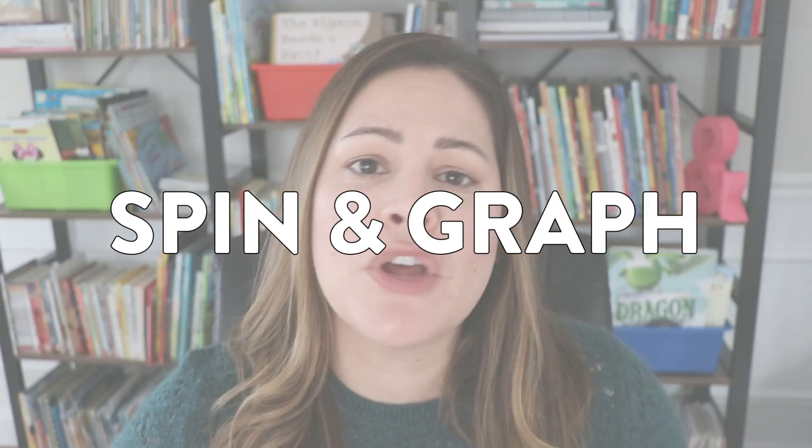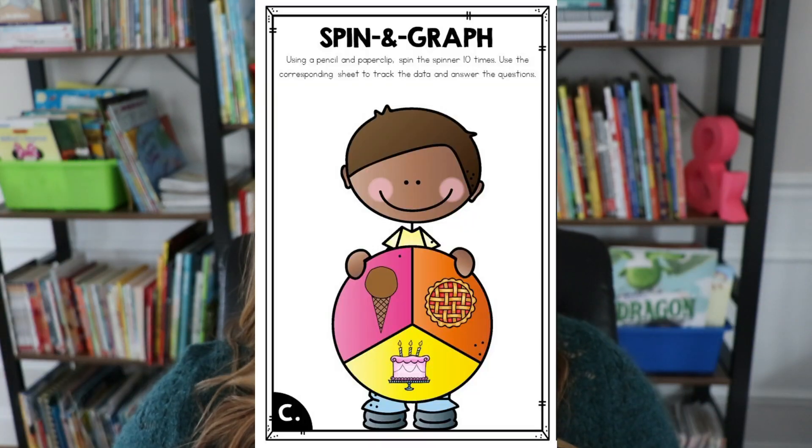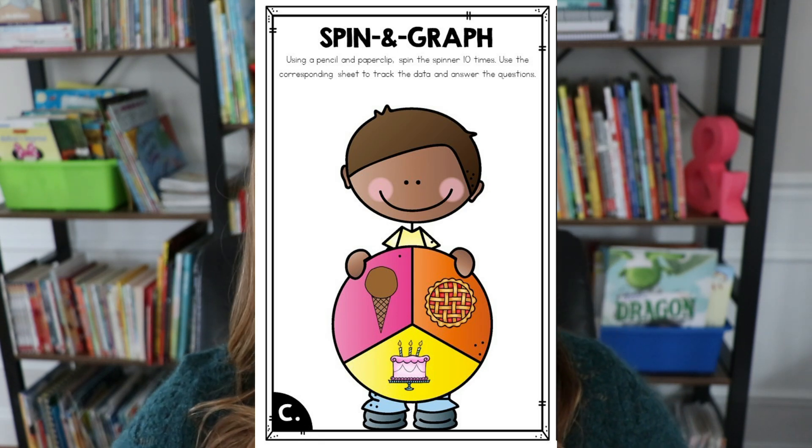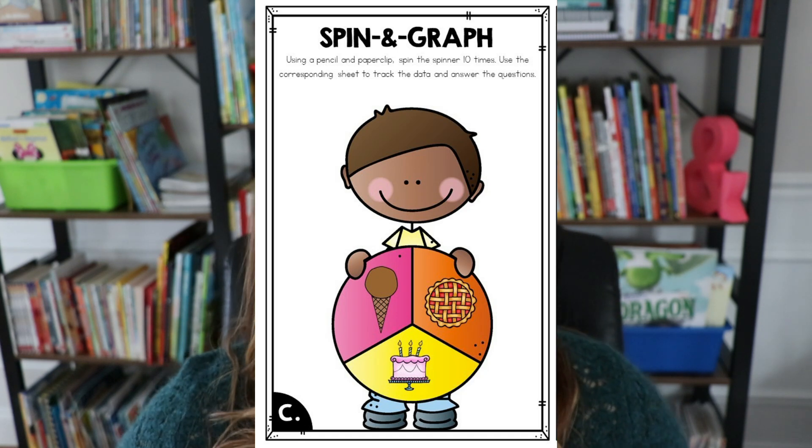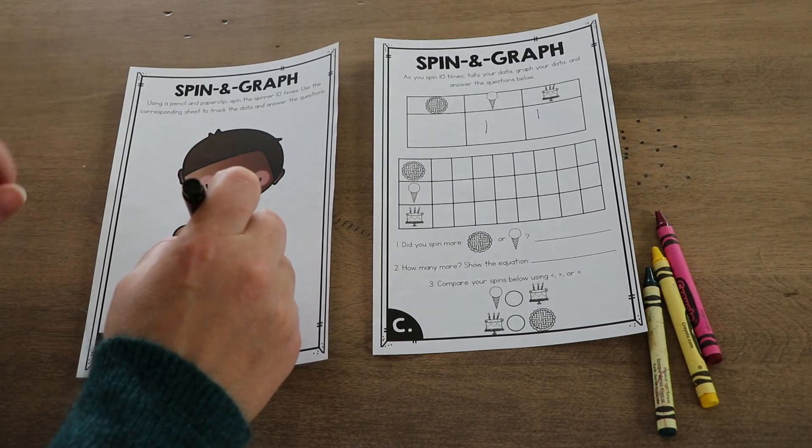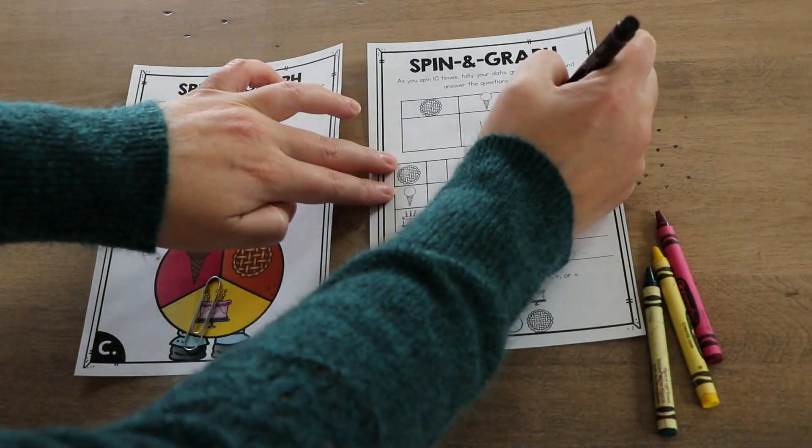Now we're moving on to activity number four — a nice independent review activity — and I have a freebie for you. Activity number four is called spin and graph. This is a fun one to throw into a math center or math tub after you've already taught students how to make graphs and interpret data. Spin and graph is as simple as it sounds: students spin and then graph. The spinning sheet features a little boy holding three different things — an ice cream scoop, a pie, and a cake.